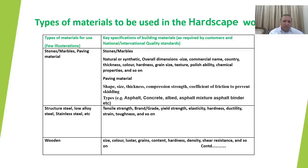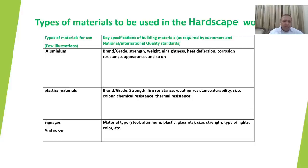For wooden features of the hardscape, one has to specify the size, color, luster, grain, content, hardness, density, and shear resistance. For features which require aluminum, the designer has to specify the brand, grade, strength, weight and air tightness, heat deflection, corrosion resistance, and appearance.